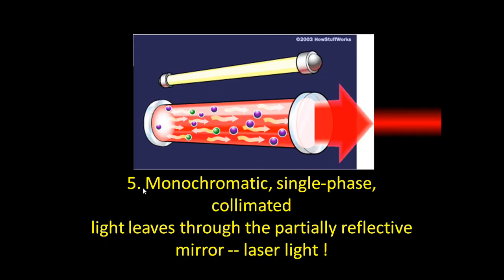Eventually, once a sufficient level has been reached, monochromatic single-phase light will leak through the partially reflective mirror. This light coming out is laser-like.